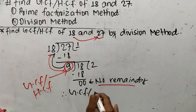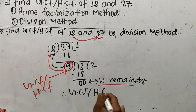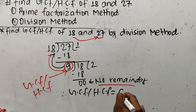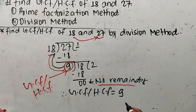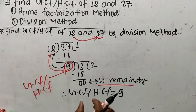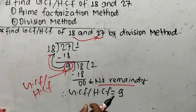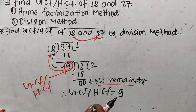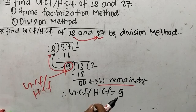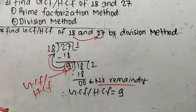The divisor that gives no remainder at last becomes the GCF or HCF. Therefore, GCF or HCF is equal to 9. In this way we can find GCF or HCF by division method. If you have any question from math, comment your question below and we shall provide a video solution. Thank you.